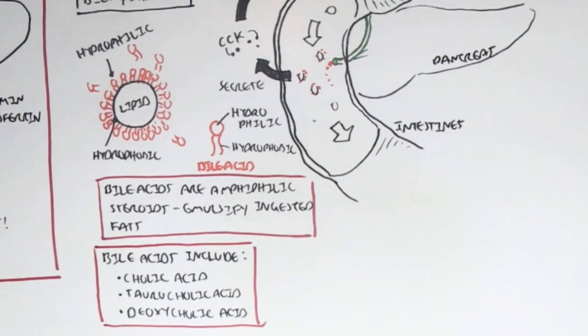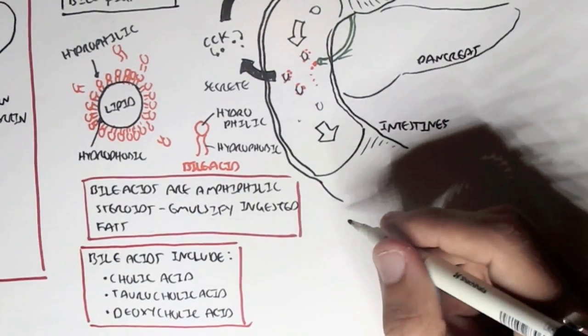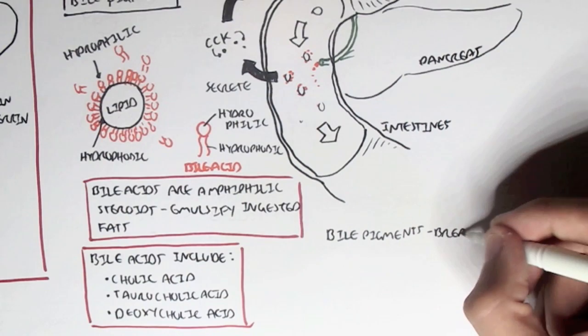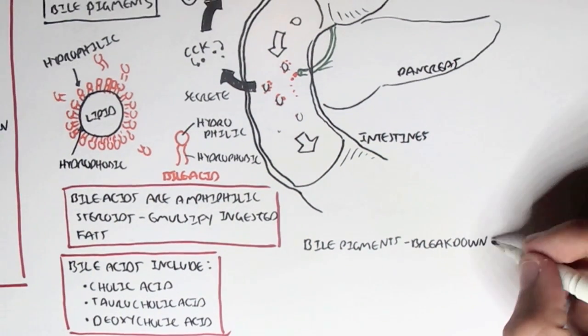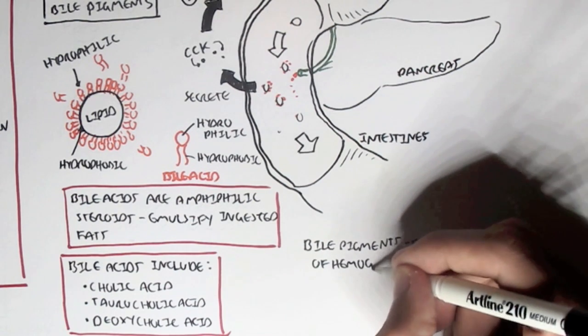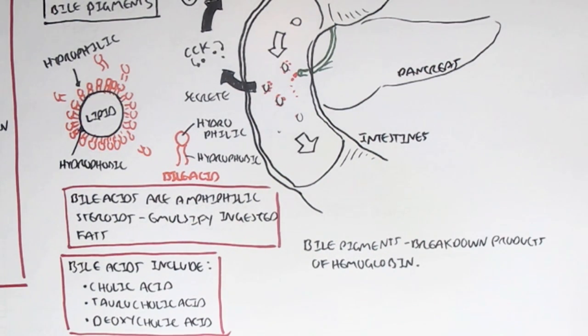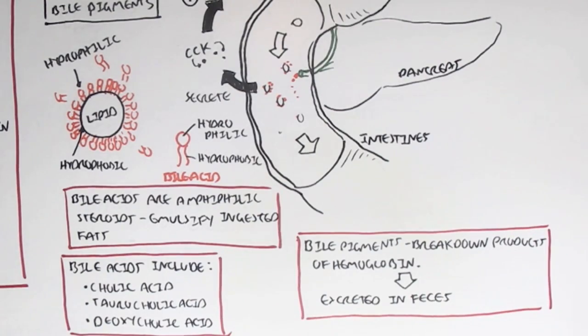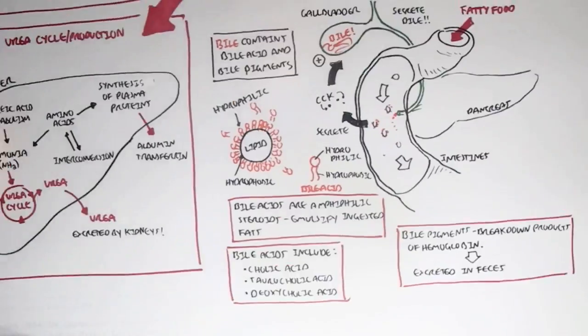Bile pigments are different to bile acids, but they are also bile. Bile pigments are actually the breakdown products of hemoglobin. Hemoglobin are the centers of red blood cells. So they're the breakdown products of hemoglobin, and these breakdown products, these bile pigments, will then be excreted out in feces. And that is why we have the brown color in our feces.